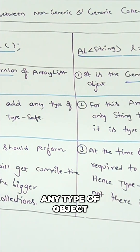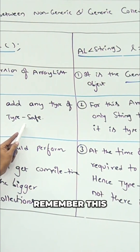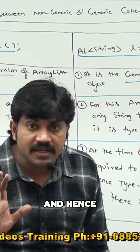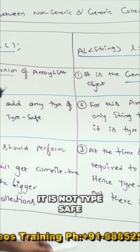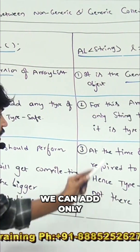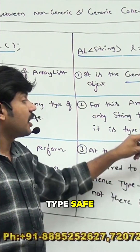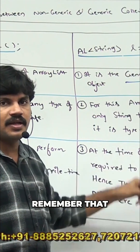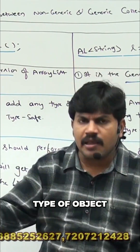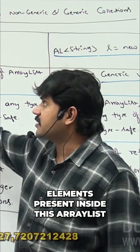For this non-generic ArrayList, we can add any type of object, and hence it is not type safe. Remember this. For this generic ArrayList, we can add only String type of objects, and hence it is type safe. If it is the normal non-generic ArrayList, we can add any type of object — there is no guarantee for the type of elements present inside.